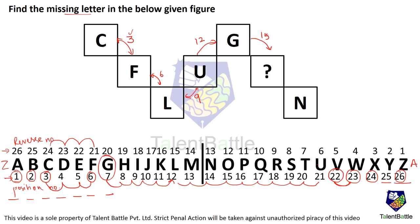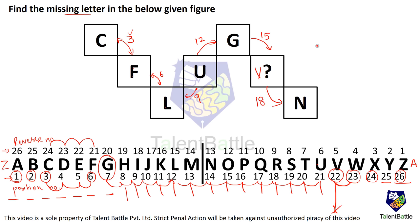So after 12 it has to be 15. After G we have to count 15 steps — counting 1 through 15 cyclically — which brings us to V. So the answer we have got is V. But we should check: from V plus 18 steps it has to come back to N.